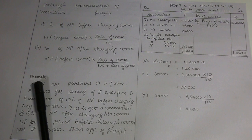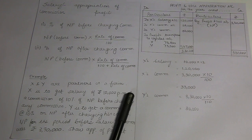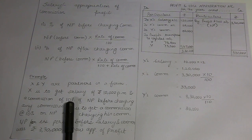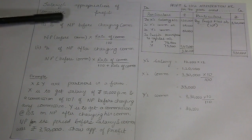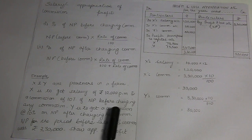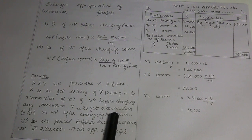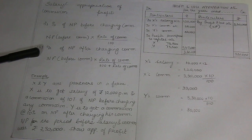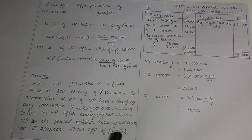Example: X and Y are partners in a firm. X is to get a salary of Rs. 10,000 per month and also a commission of 10% of net profit before charging any commission — that means it falls under Case 1. Y is to get a commission at the rate of 10% on net profit after charging such commission — that means it falls under Case 2. The profit and loss for the period before charging salary and commission was Rs. 3,30,000. Show the appropriation of profits.